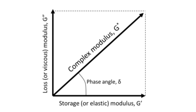If the phase angle is closer to 90 degrees, then the complex modulus is nearly all due to viscous contributions. In other words, the product is more of a liquid than a solid, and if you deform it, it's not going to bounce back — there'll be a permanent deformation. Tan delta, the tangent of the phase angle, is therefore just the ratio of the viscous to elastic effects.